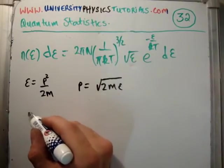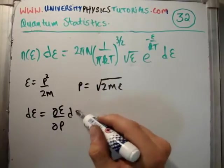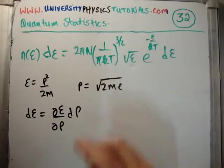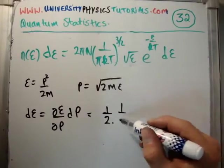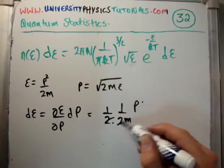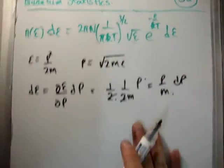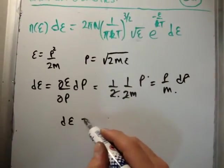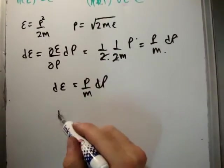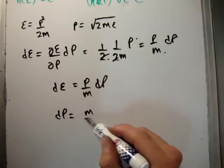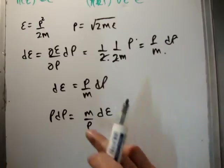So, what we are able to do is we are able to get a functional form for d e. So, let's go ahead and do it. So, d epsilon is equal to del epsilon del p dp is equal to 1 over 2m times p is equal to p over m times dp. So, that means that del epsilon is equal to p over m dp. Or, we could say that p dp is equal to m d e. We could say that as well.